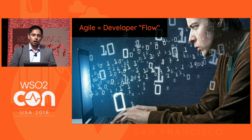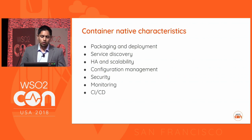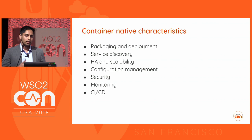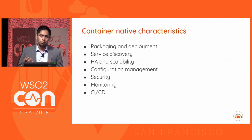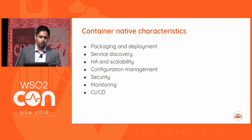It's all about developer flow — how we make the development process more agile, and at the same time, how we take advantage of the container-nativeness of things we write. So we look at a couple of these characteristics: how we package and deploy, how we do service discovery, highly available and scalable deployments, configuration management when it comes to managing different configuration properties, security, monitoring, and then continuous integration and deployment.